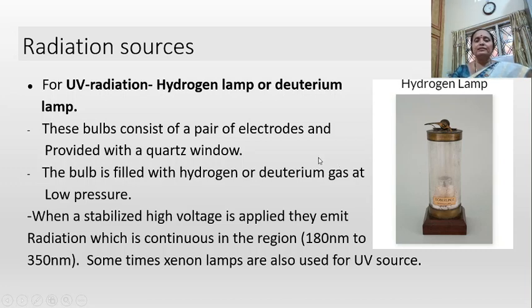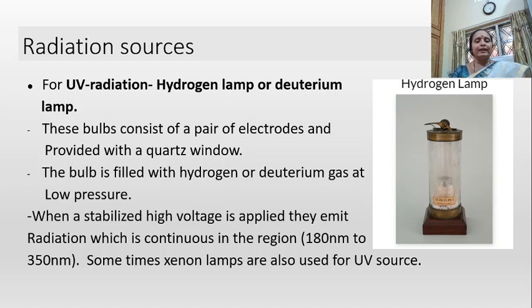These bulbs consist of a pair of electrodes and are provided with a quartz window. The bulb is filled with hydrogen or deuterium gas at low pressure. When stabilized high voltage is applied, they emit radiation which is continuous in the region of 180 nanometers to 350 nanometers.